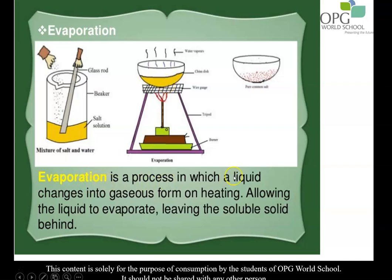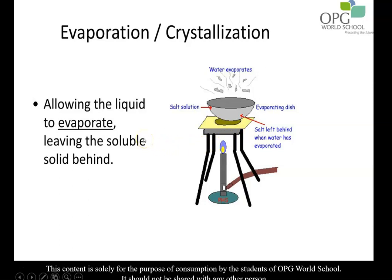Evaporation is a process in which a liquid changes into gaseous form on heating, and allowing the liquid to evaporate will leave the soluble solid behind. Although salt was completely mixed with water, only water has the capacity to form vapors at 100 degrees, but not the salt. Similarly, if you take maple syrup or honey, which is a saturated sugar solution with very little water, and heat it, after a few minutes a solid component will be left behind — the sugar crystals — because the water inside will be lost to the environment.